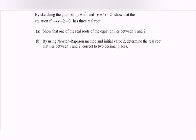By sketching the graph of y = x³ and also y = 4x - 2, show that the equation x³ - 4x + 2 = 0 has 3 real roots. Part (a): Show that one of the real roots of the equation lies between 1 and 2. Part (b): By using the Newton-Raphson method with initial value x₀ = 2, determine the real root that lies between 1 and 2, correct to two decimal places.